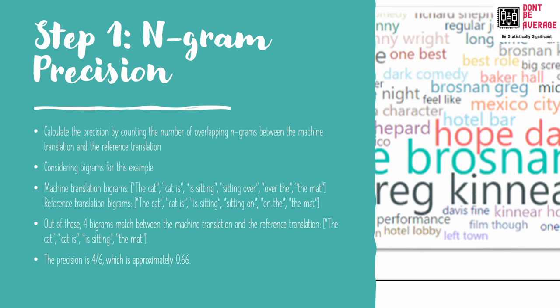Out of these bigrams, four match between the machine translation and the reference translation: 'the cat,' 'cat is,' 'is sitting,' and 'the mat.' So the precision would be 4 by 6, which is approximately 0.66.